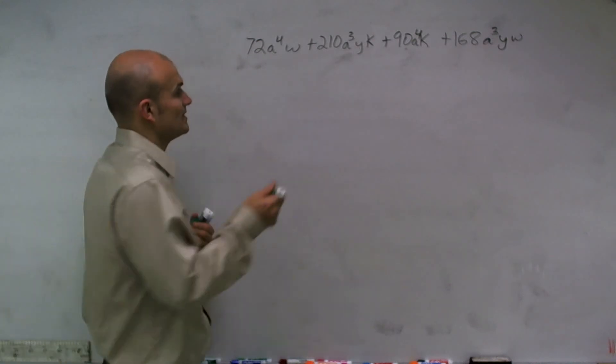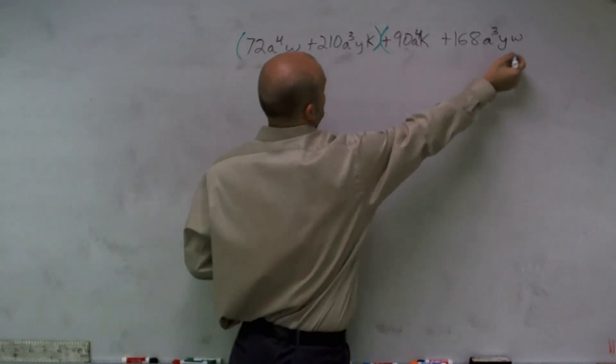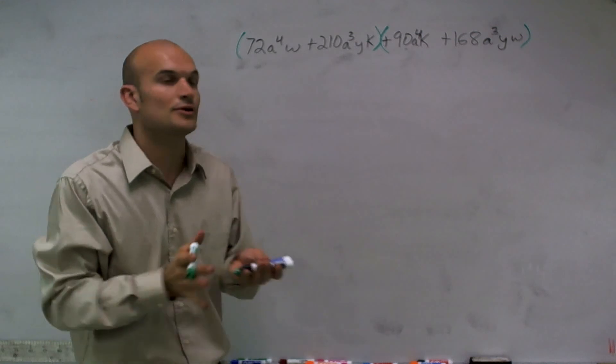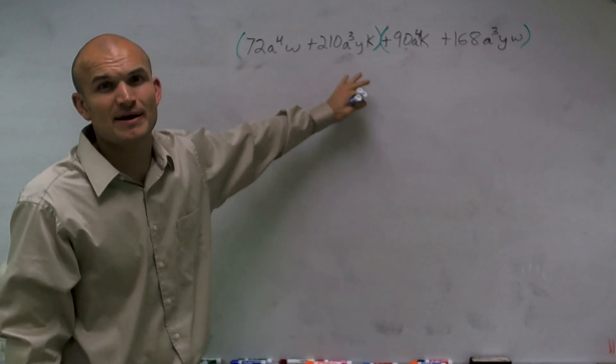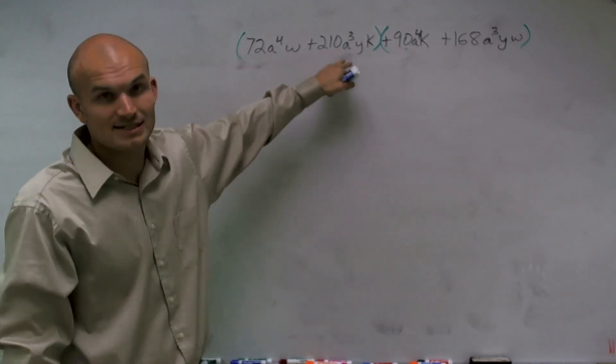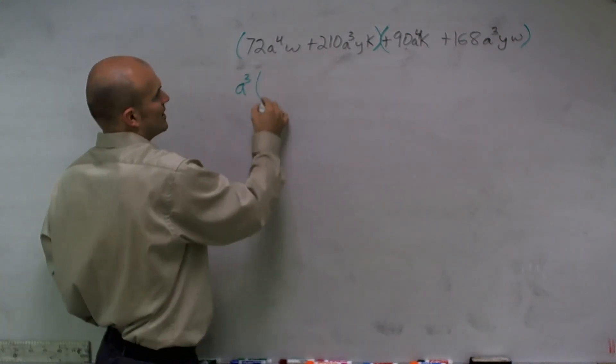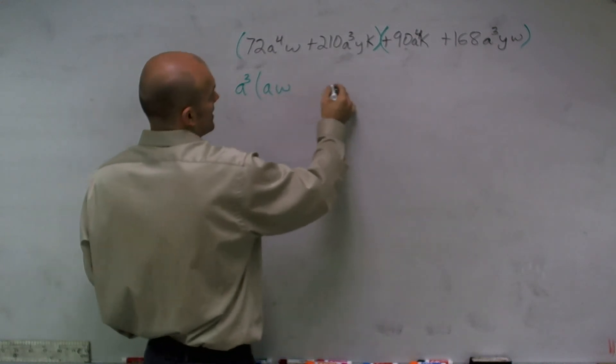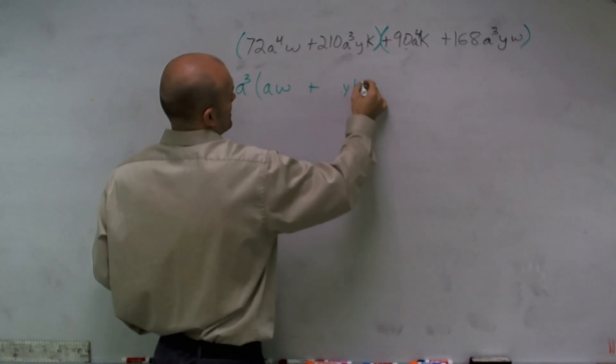Remember, when we're factoring by grouping, the first thing we want to do is group our first two terms and see what we're going to get. You want to factor the GCF out of the first two terms. Numbers aside, when you look at this, if I was going to factor out my variables, I'm going to have to factor out an a³, right? And being left over would be an aw. And over here, whatever my number is, plus I'll have a yk.